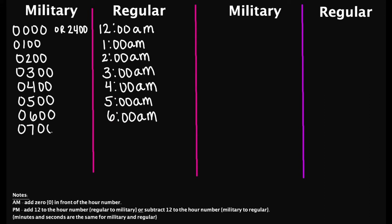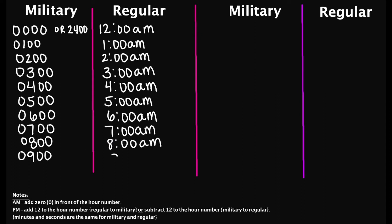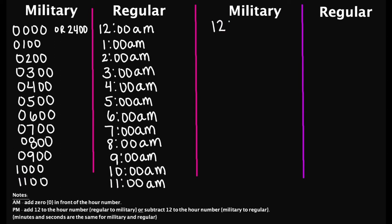0700 hours is 7 a.m. 0800 hours is 8 a.m. 0900 hours is 9 a.m. 1000 hours is 10 a.m. And then we have 1100 hours — this is 11 a.m. 1200 hours is 12 p.m.